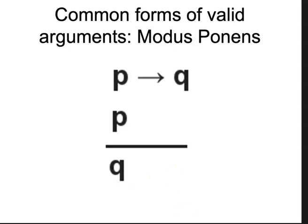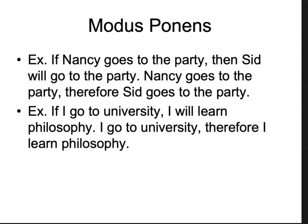Let's look at examples of modus ponens. If Nancy goes to the party, then Sid goes to the party. That's if P, then Q. Nancy does go to the party — that's P. Therefore, Sid goes to the party — Q. It is a modus ponens form: if P then Q; Nancy goes to the party, P; therefore Sid goes to the party.